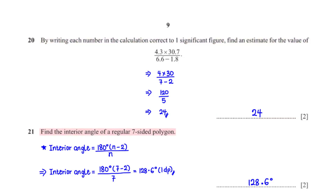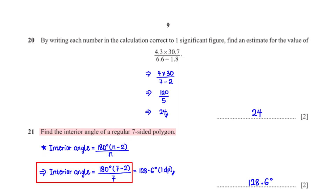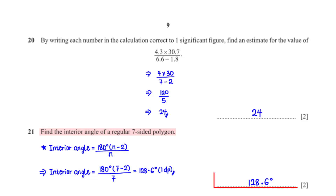Find the interior angle of a regular 7-sided polygon. Here is the formula for the size of an interior angle in a regular polygon, where n is the number of sides of the polygon. In this case, n is 7. When we type this into the calculator, we get 128.6 degrees rounded to 1 decimal place.